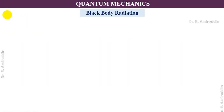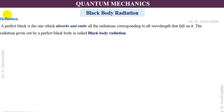Let us start with the first topic: blackbody radiation. A perfect blackbody is one which absorbs or emits all radiation corresponding to all wavelengths that fall on it. The radiation given out by a perfect blackbody is called blackbody radiation. To explain this phenomenon, let us consider a small experiment.